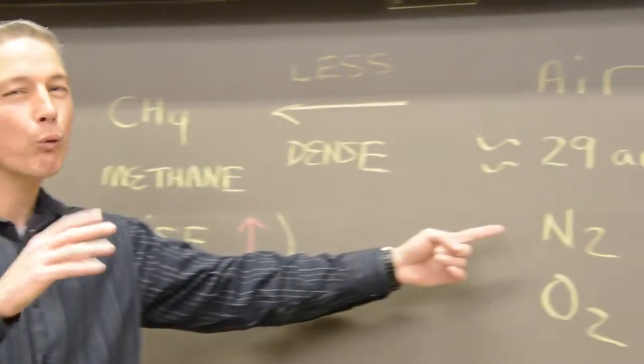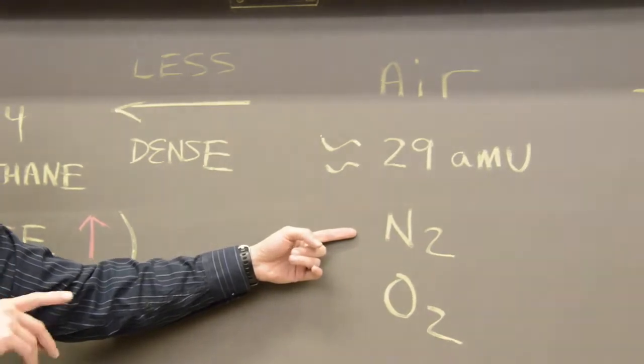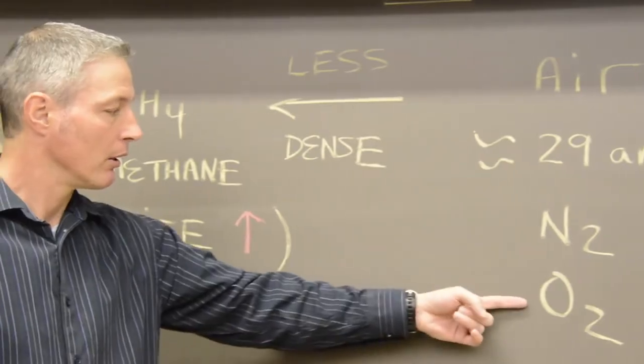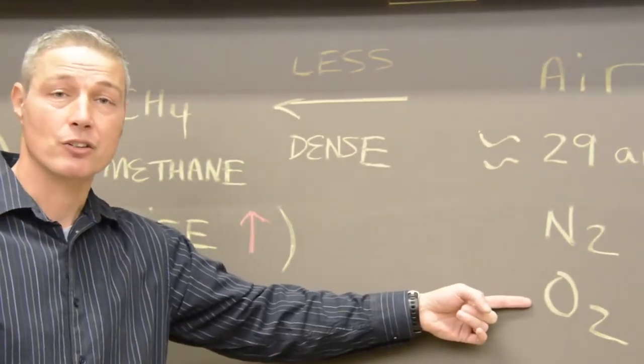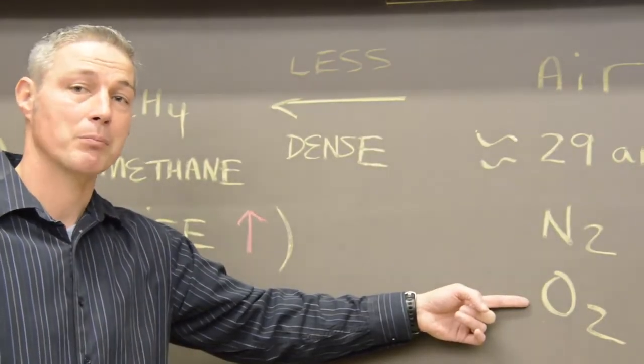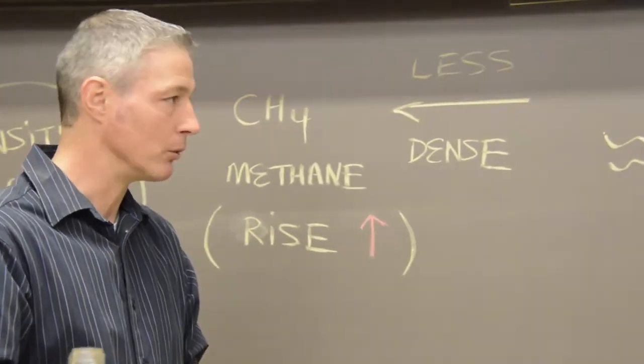Air is roughly three-quarters nitrogen, which is 28 atomic mass units. That's the mass of a proton. It's how heavy the atoms are. The other quarter is oxygen that we breathe and need. That's 32 atomic mass units. So air is basically 29 atomic mass units.